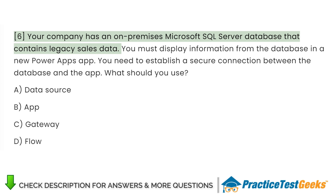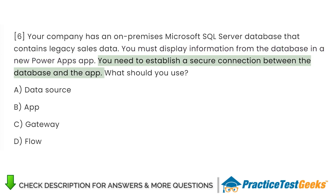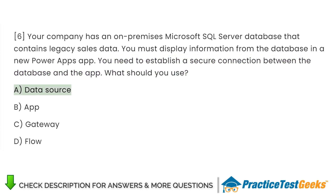Your company has an on-premises Microsoft SQL Server database that contains legacy sales data. You must display information from the database in a new Power Apps app. You need to establish a secure connection between the database and the app. What should you use? A. Data Source. B. App. C. Gateway. D. Flow.